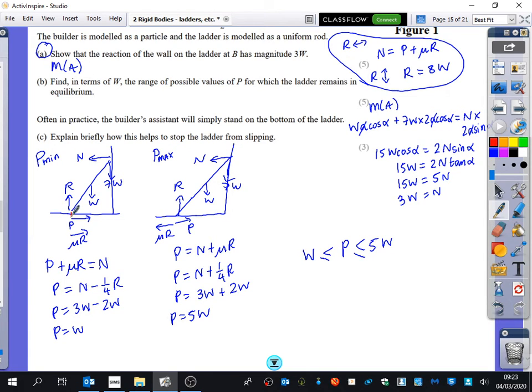So if someone is standing on the bottom of the ladder, I'm now going to add like an extra weight at the bottom here. I don't know, however big this builder might be. Let's say this builder was seven W. So this builder is also seven W. And we're just going to try and think about how that changes the calculations.